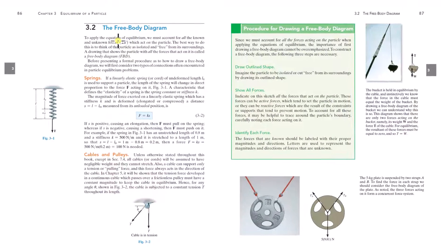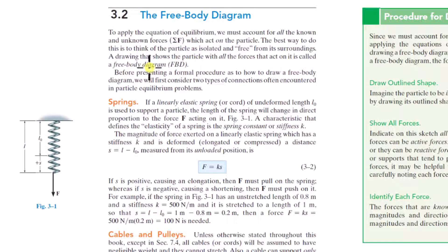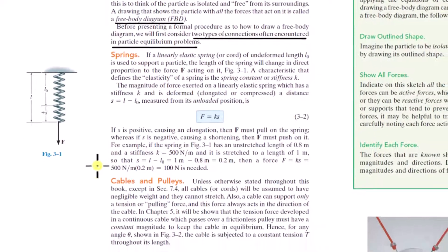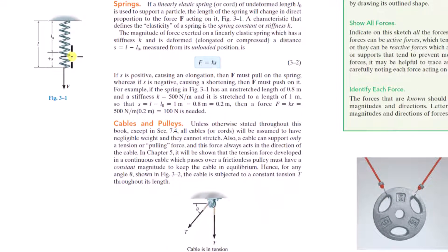To apply the equations of equilibrium, we need to draw free body diagrams. Before they talk about free body diagrams, they want to discuss two types of connections often encountered in particle equilibrium problems: springs, cables, and pulleys. A spring is an element where the force is a linear function of the displacement from its equilibrium position, with a constant of proportionality K establishing that linear relationship.